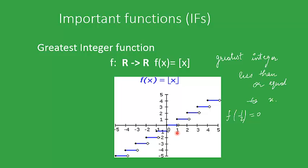At x equal to 1, y comes out to be 1, as the greatest integer less than or equal to 1 is 1. This function is also called the step function, as you can see from the graph — the value is stepped up by one unit as the value of x jumps from one integer to the next integer.